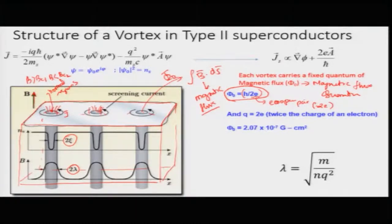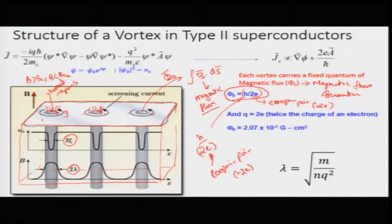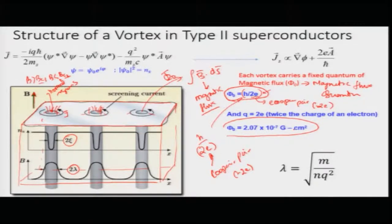A proof of Cooper pairs came from measuring the magnetic flux of each vortex — it was shown to be h by 2e, and this 2e proved that Cooper pairs have a total charge of minus 2e. It is important to remember that vortices in Type 2 superconductors carry a fixed quantum of magnetic flux in units of h divided by 2e, with a value of about 2.07 × 10⁻⁷ Gauss·cm². The discovery and theoretical derivation of the ordered vortex arrangement led to another Nobel Prize.